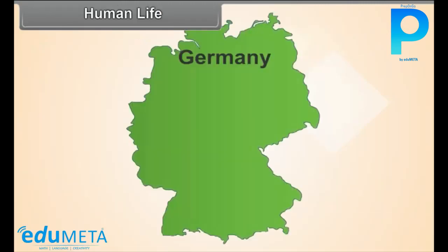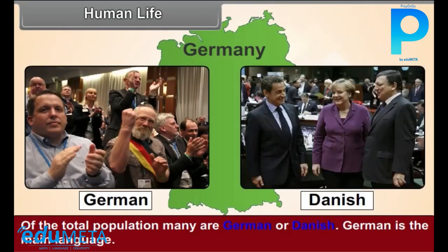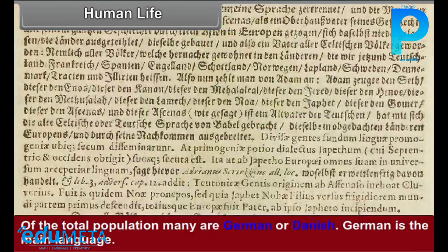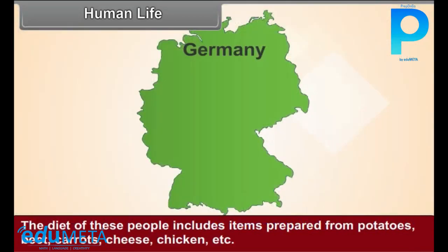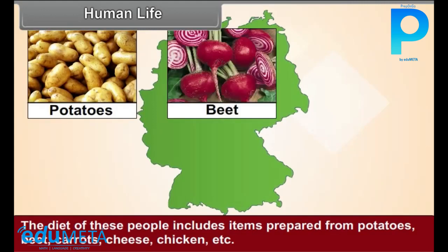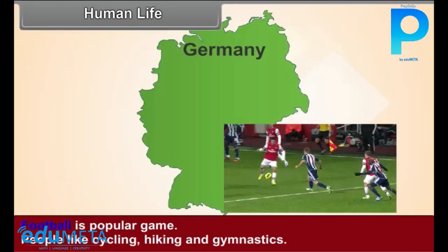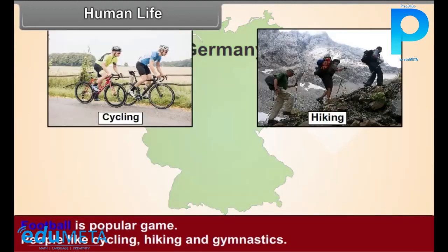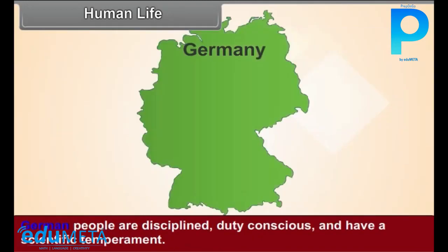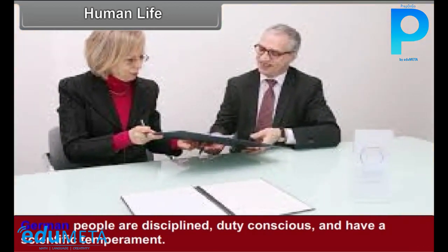Human Life. Of the total population, many are German or Danish. German is the main language. The diet of these people includes items prepared from potatoes, beet, carrots, cheese, chicken, etc. Football is a popular game. People like cycling, hiking, and gymnastics. German people are disciplined, duty-conscious, and have a scientific temperament.